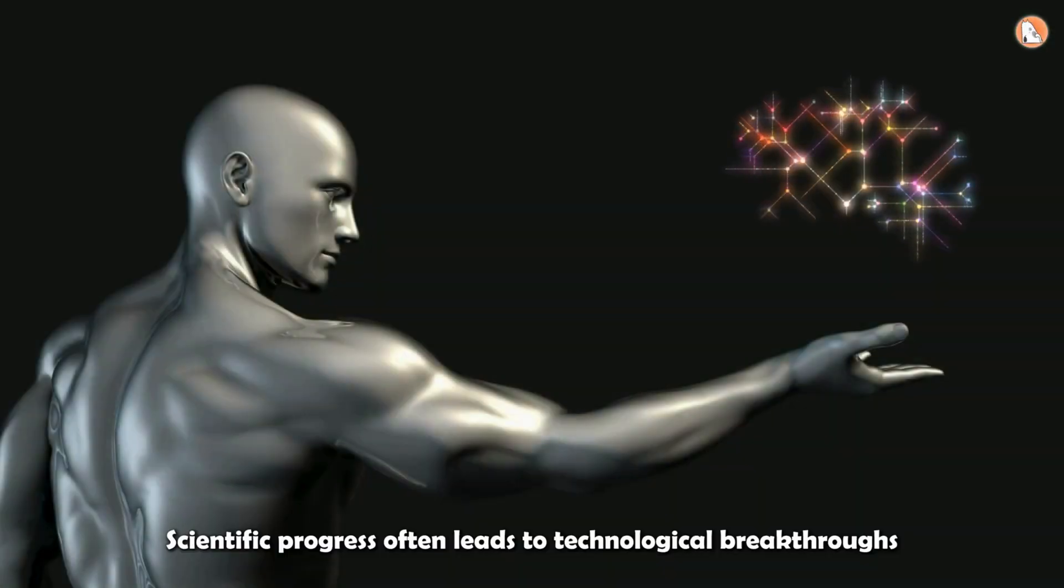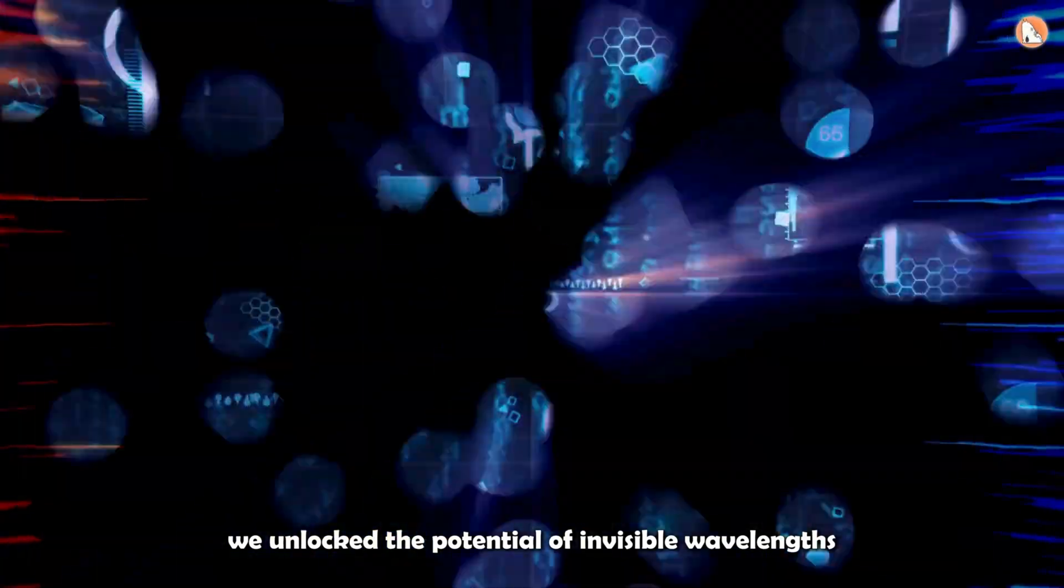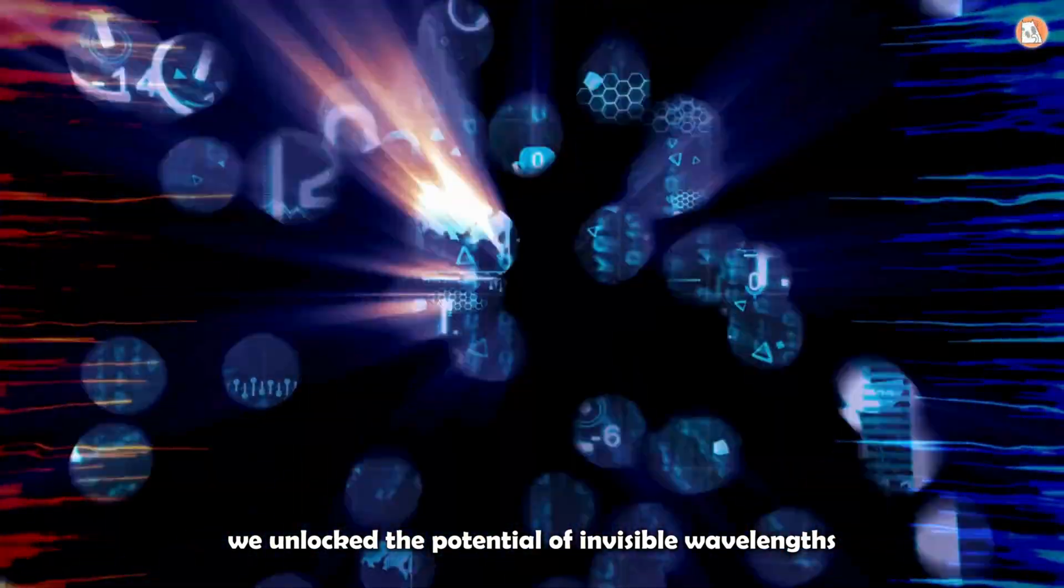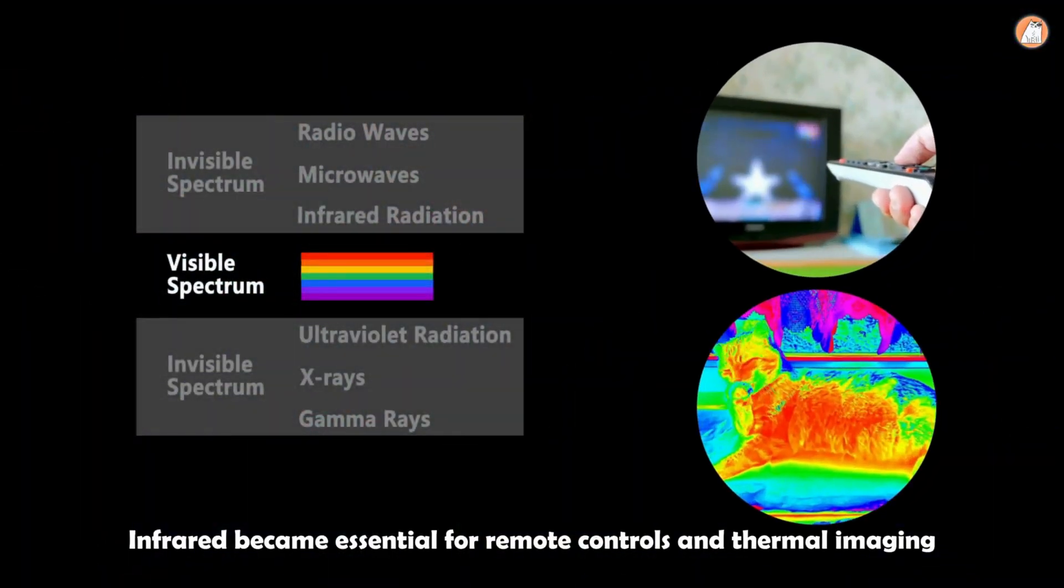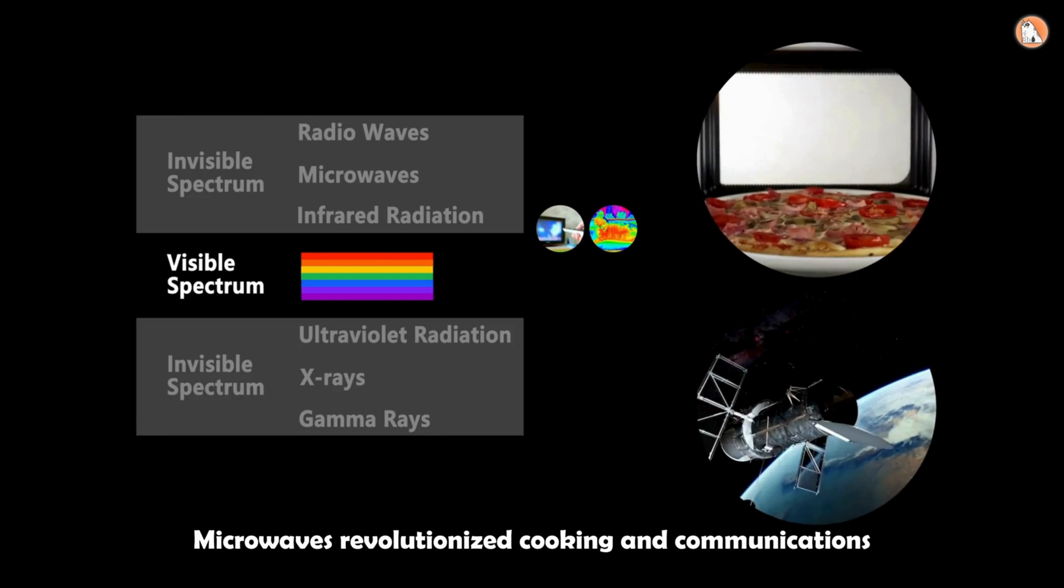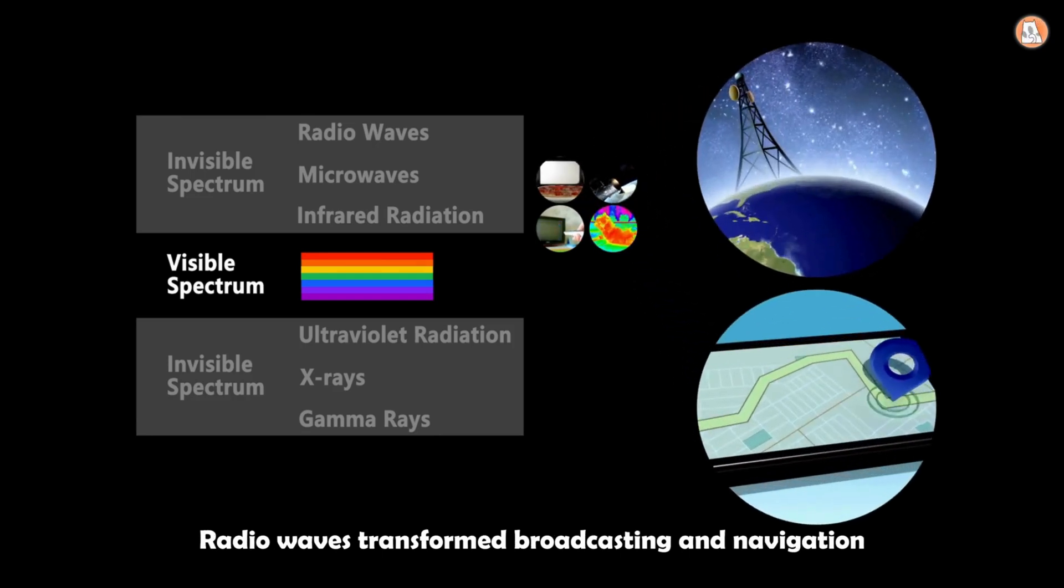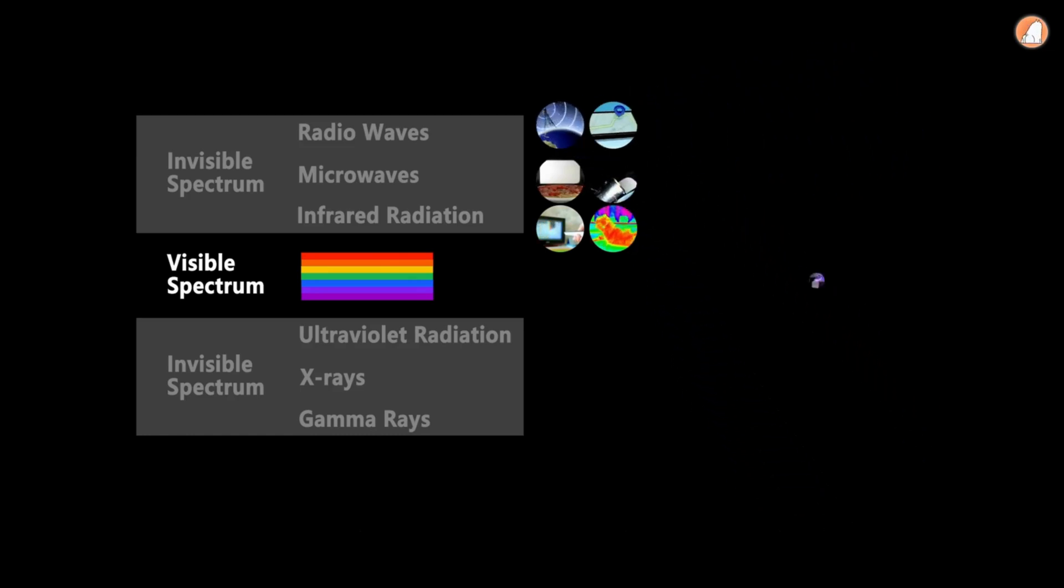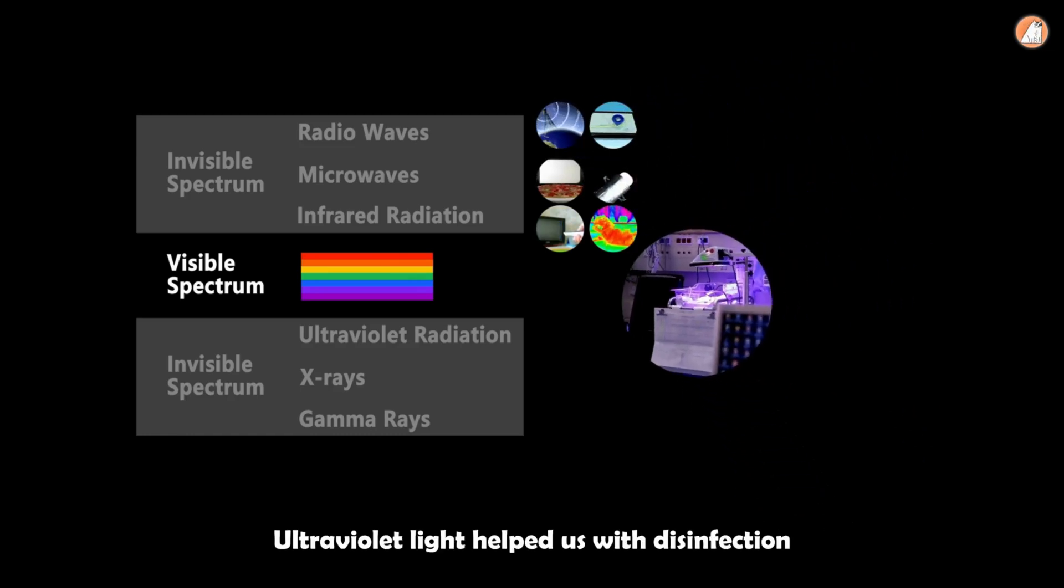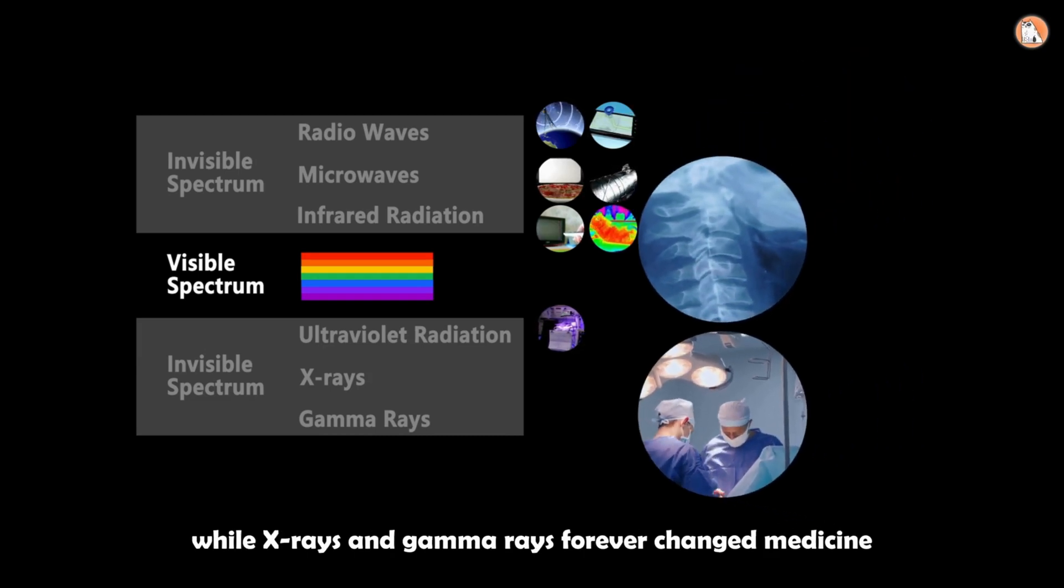Scientific progress often leads to technological breakthroughs. Initially, humans used visible light mainly for illumination, but over time, we unlocked the potential of invisible wavelengths. Infrared became essential for remote controls and thermal imaging. Microwaves revolutionized cooking and communications. Radio waves transformed broadcasting and navigation. Ultraviolet light helped us with disinfection, while X-rays and gamma rays forever changed medicine.